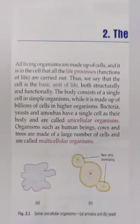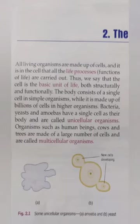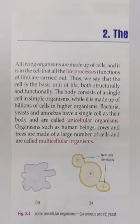In lesson 1 we studied that all living beings are made up of cells, and it is inside the cells that all the life processes — the life functions and many reactions — happen in our body. That's why we say the cell is the basic structural and functional unit of life. There are two types of organisms: unicellular organisms and multicellular organisms.